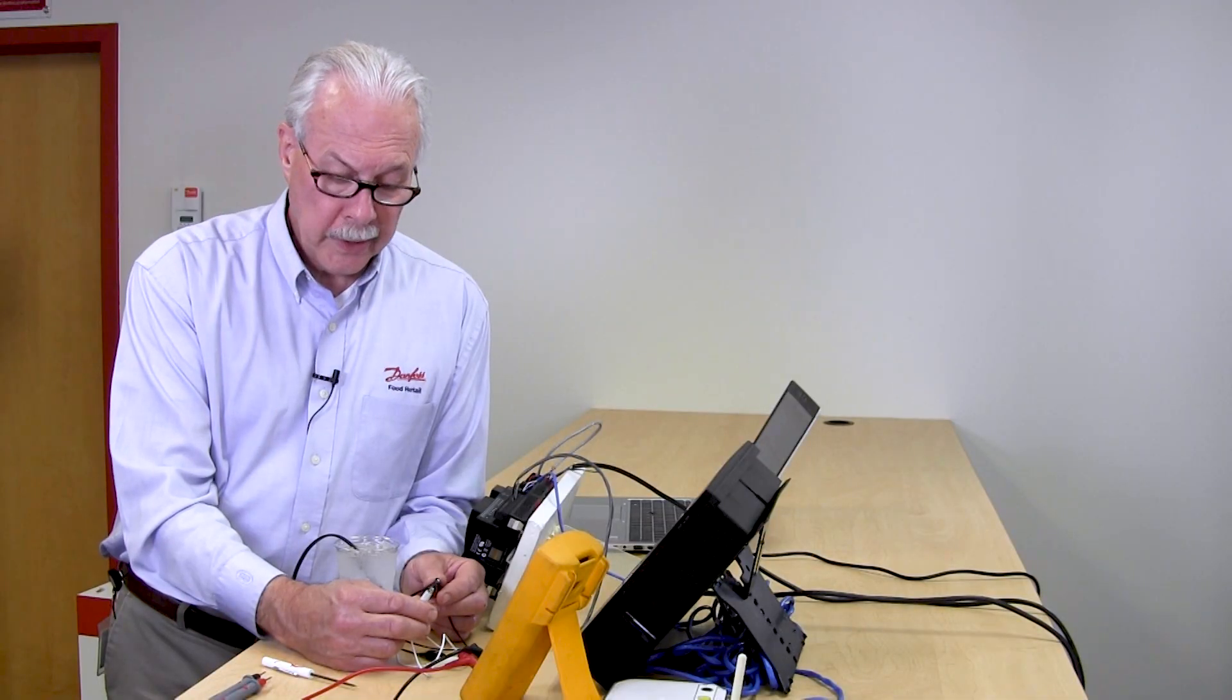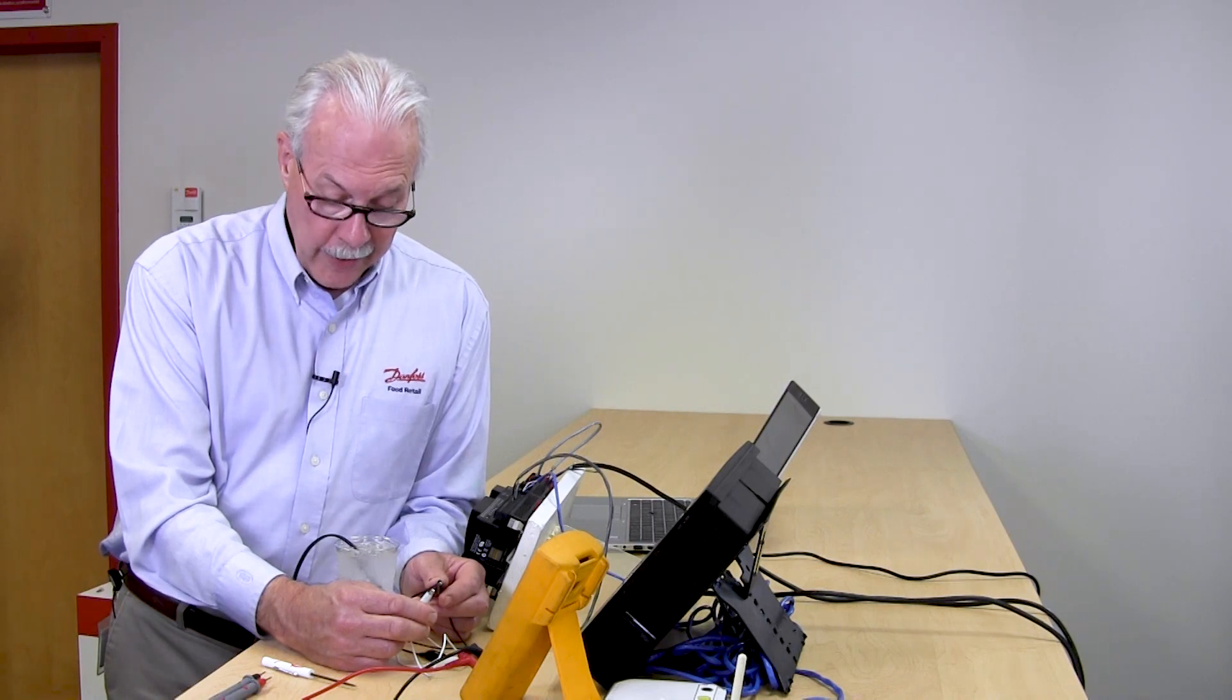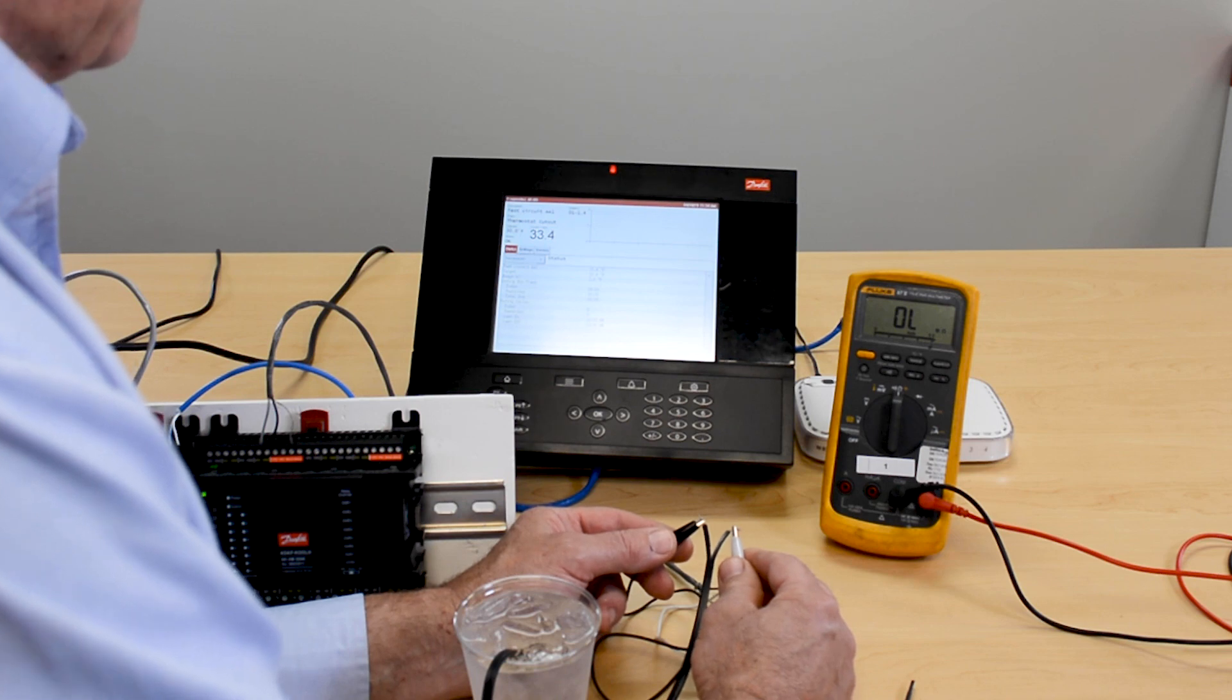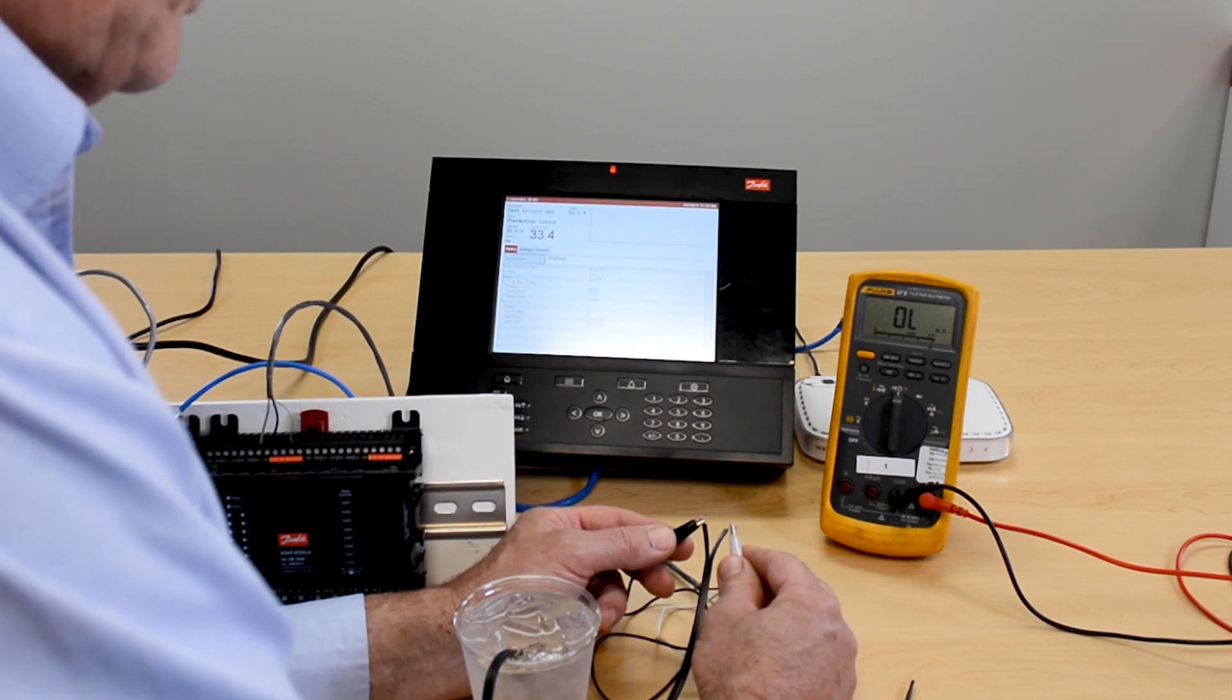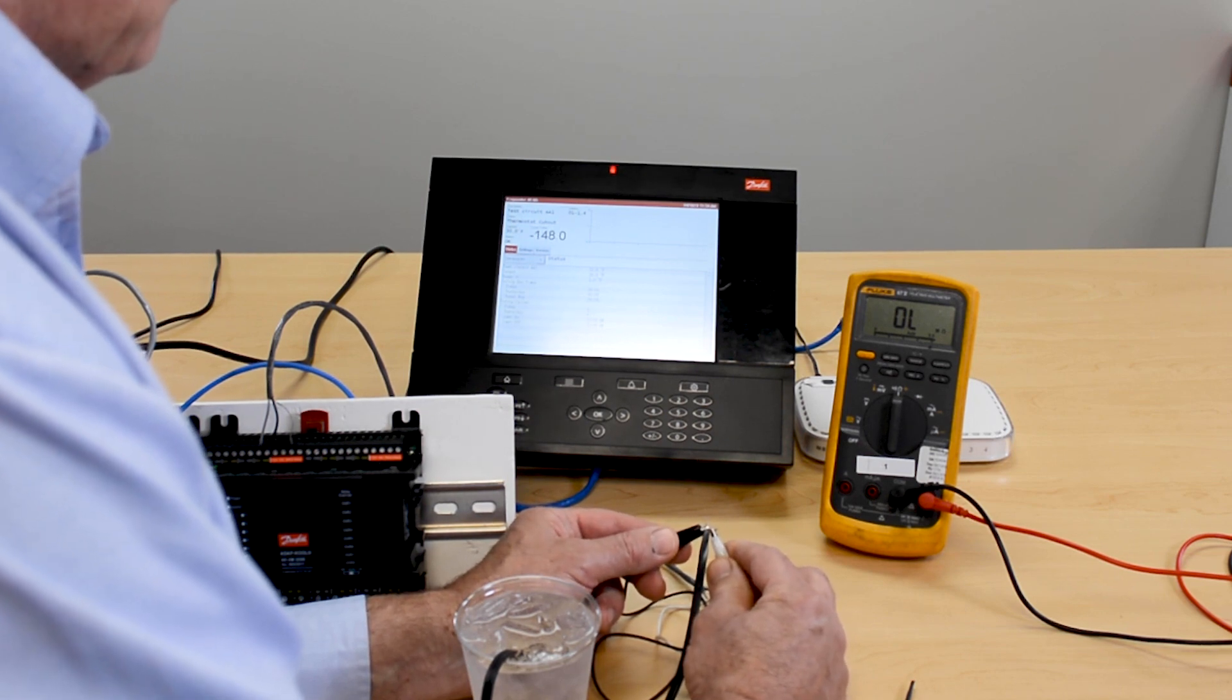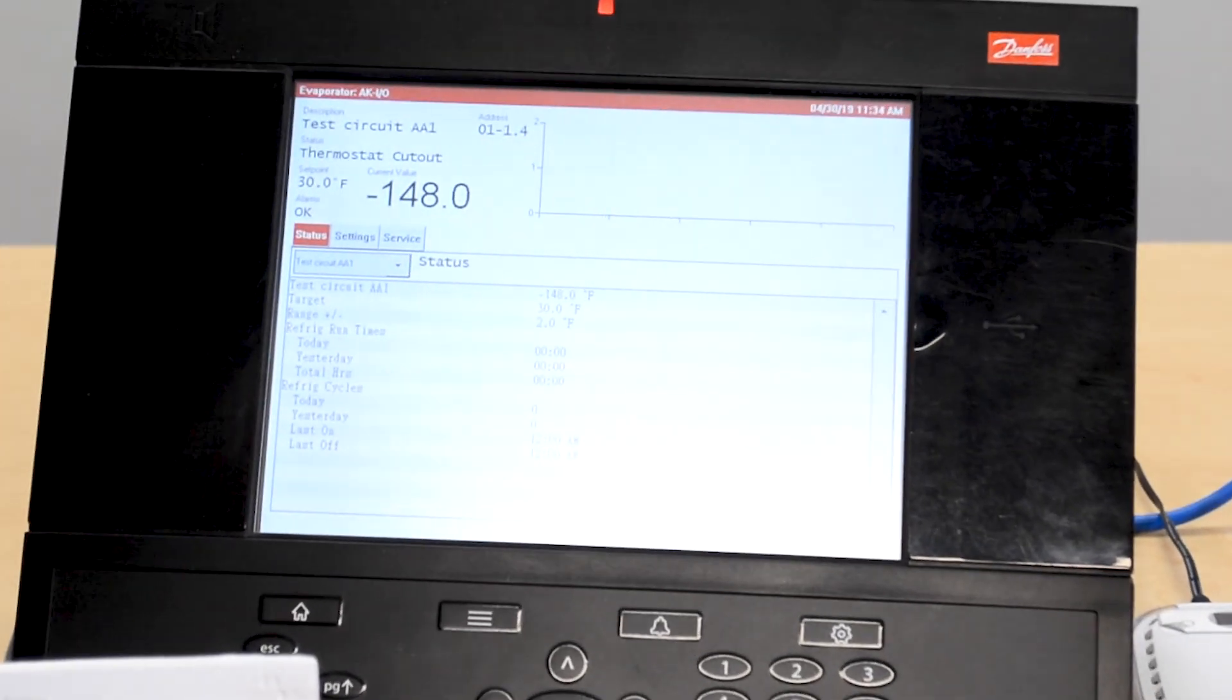Now we're going to look at the different scenarios for a temp sensor. As we have it right now in normal operating conditions, we can see on the display 33.4 degrees. But what is it going to show us if we have a short? I'll take these two leads and hold them together, and we notice it goes to minus 148.